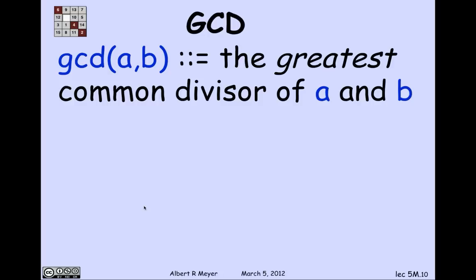Now we'll focus on the concept of the greatest common divisor of A and B, called the GCD of A and B. The GCD exists by the well-ordering principle because it's a set of non-negative integers with an upper bound — namely, A is an upper bound on the GCD of A and B. That implies there will be a greatest one among all the common divisors. And one is always a common divisor, so there are guaranteed to be some.